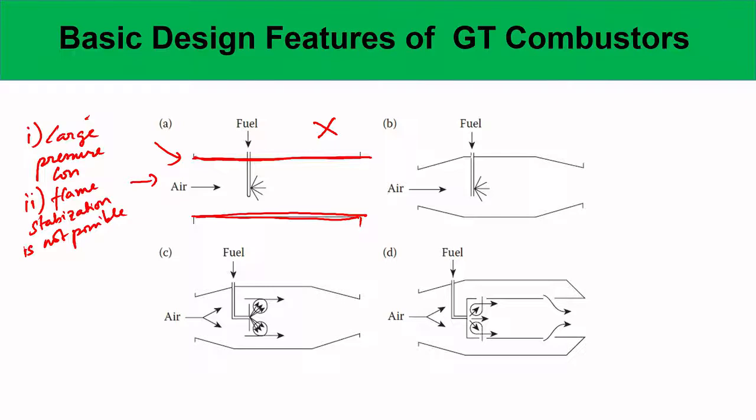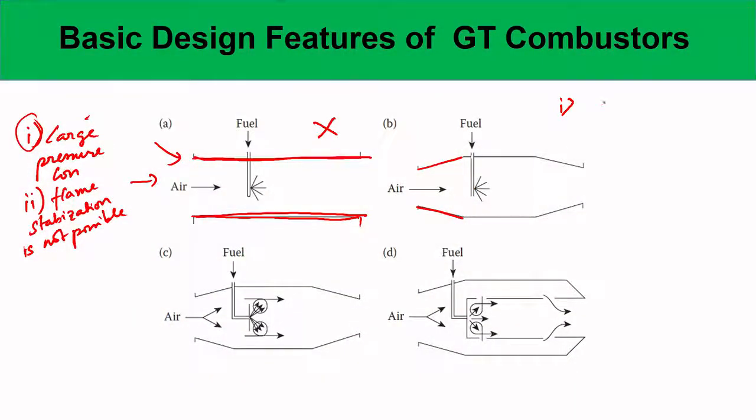The solution is to first slow down the air velocity. The air velocity can be reduced by increasing the cross-section area before entry into the combustor — this section is called a diffuser. For subsonic flow, increasing cross-section area reduces velocity by the continuity equation. This reduces pressure loss, satisfying the first condition, but the flame stabilization problem is still not satisfied.